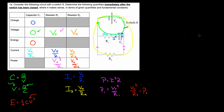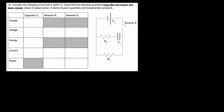Now, what if we leave this hooked up for a really long time — the steady state? The defining feature of the steady state is that this capacitor is going to build up charge. What was an empty parking lot that offered no resistance becomes a full parking lot. Current comes out of the battery, looks at this branch, and can't go that way at all. The capacitor completely blocks that branch, and no more current flows through any branch with a capacitor in the steady state.